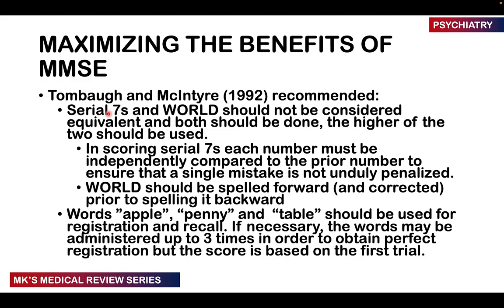You should also consider doing the serial sevens and the spelling of 'world' together rather than as separate entities, since they are not equivalent — whichever one gets the higher score is the value you record. When scoring the serial sevens, each number must be independently compared to the prior number. The words apple, penny, and table can be used for registration and recall. If necessary, the words must be administered up to three times to obtain perfect registration, but the score is based on the first trial.